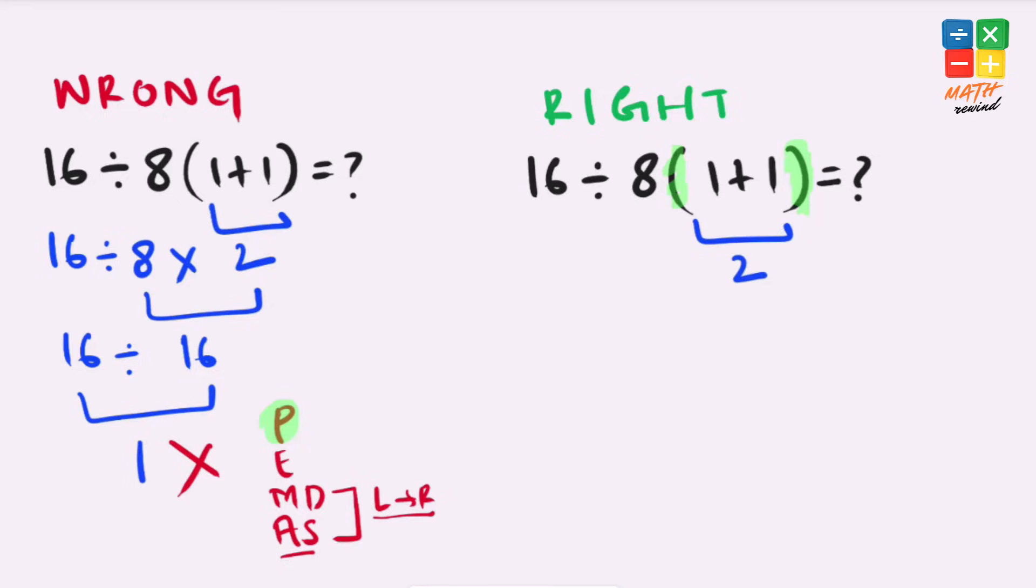It's 1 plus 1, which gives us 2. Our equation becomes 16 divided by 8 times 2.